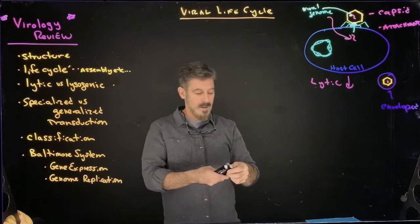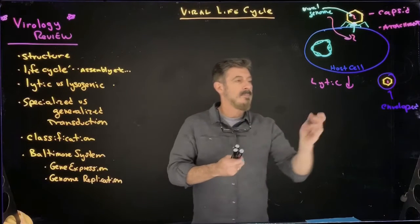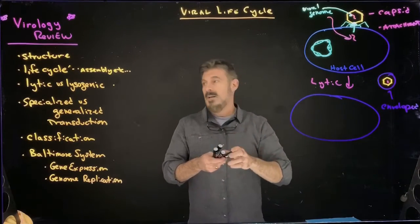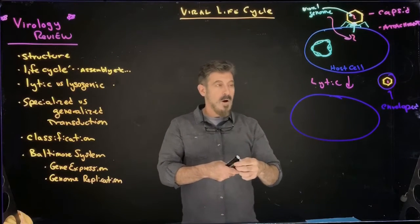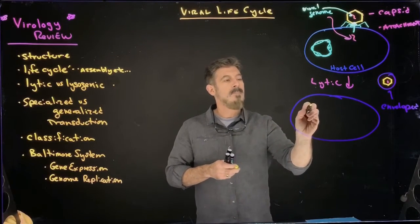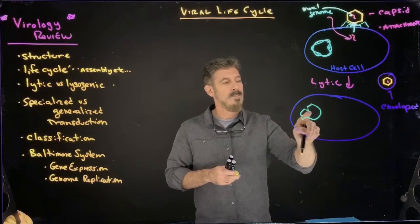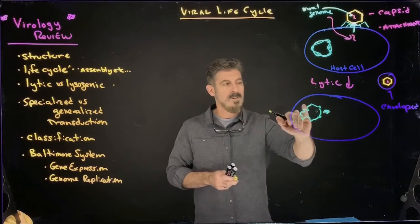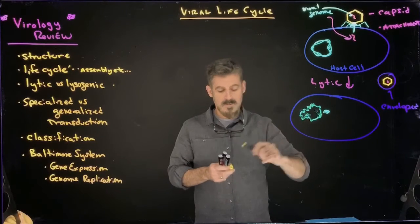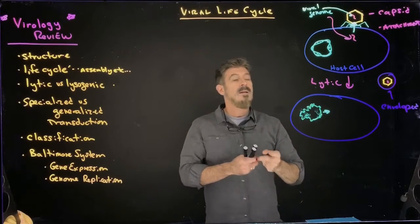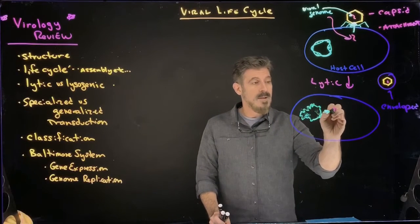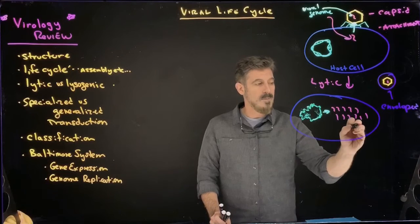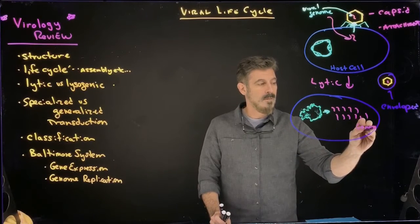And in this lytic cycle, what would occur is that we kind of get into the basic phases of the viral life cycle. So the host cell's DNA gets sort of chopped up and used as raw material. So the genome is sort of destroyed right from the start. That material is used to make copies of the viral genome. So we get genome replication.